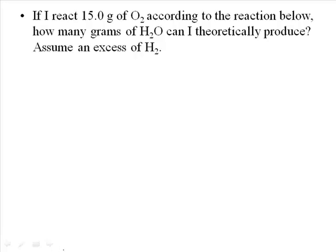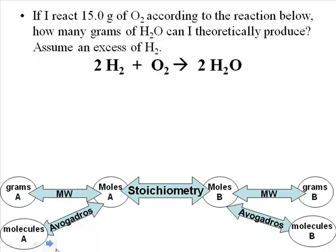Let's try another three-step calculation. Here's the question: if you react 15 g of oxygen according to the reaction 2 H2 + O2 → 2 H2O, how many grams of water can you theoretically produce? Assume you have an excess of H2. Pause the video and give it a try — refer to your roadmap if you get stuck.